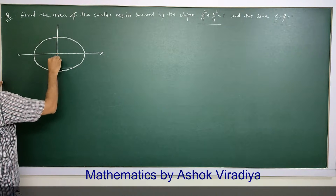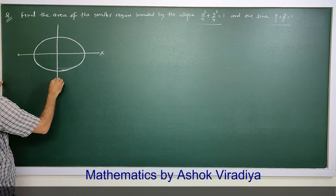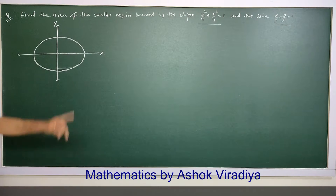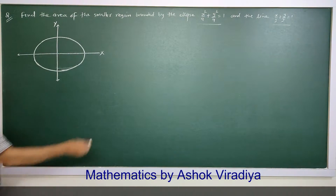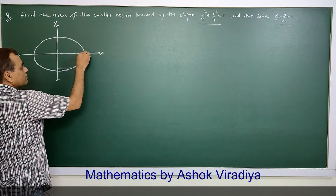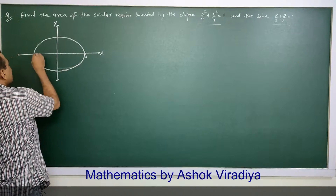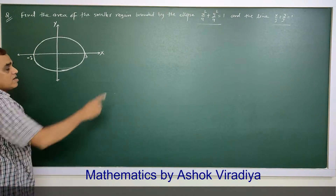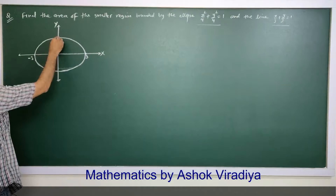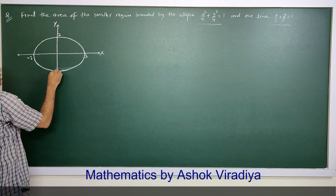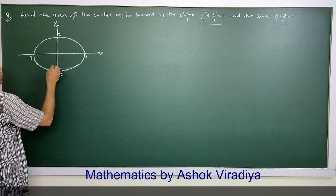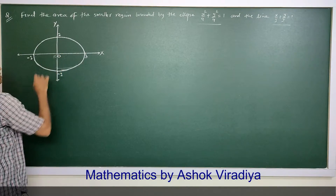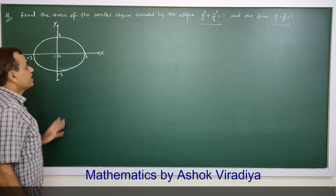Here this is the y axis. For x square upon 9, this number will be 3, and here minus 3. For y square upon 4, here 2 and minus 2. This is the origin. So it is an ellipse.